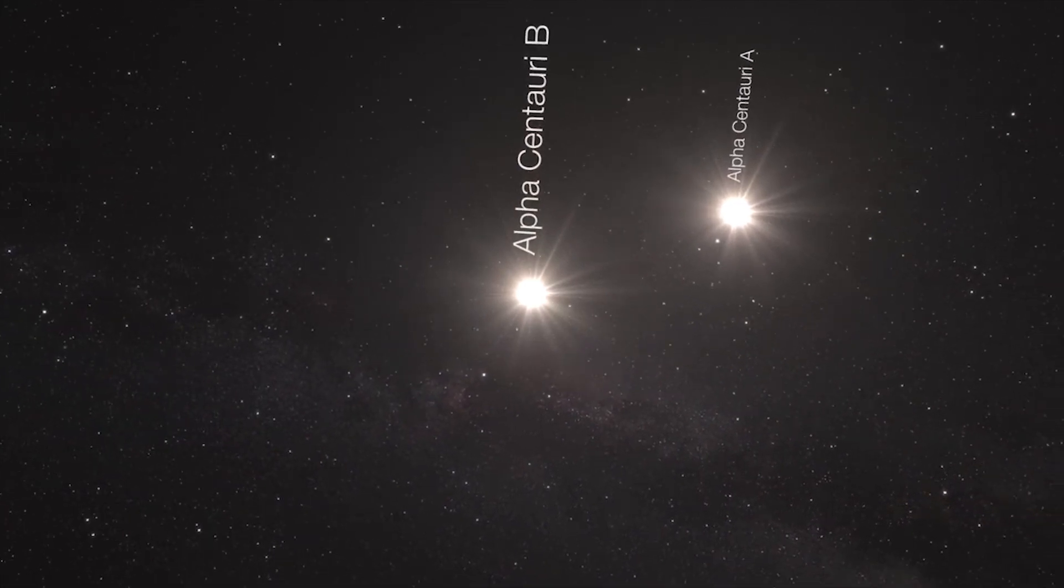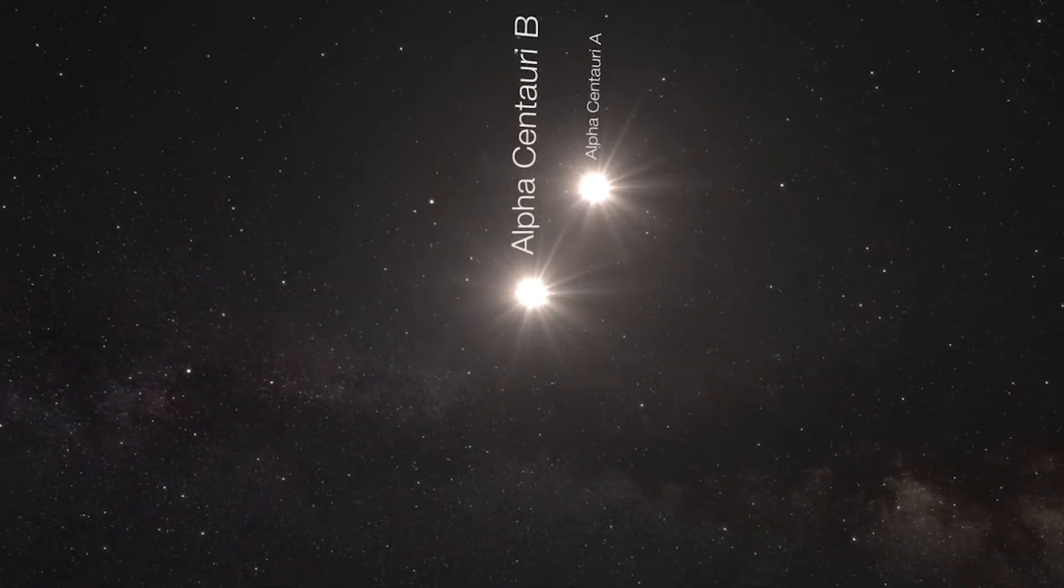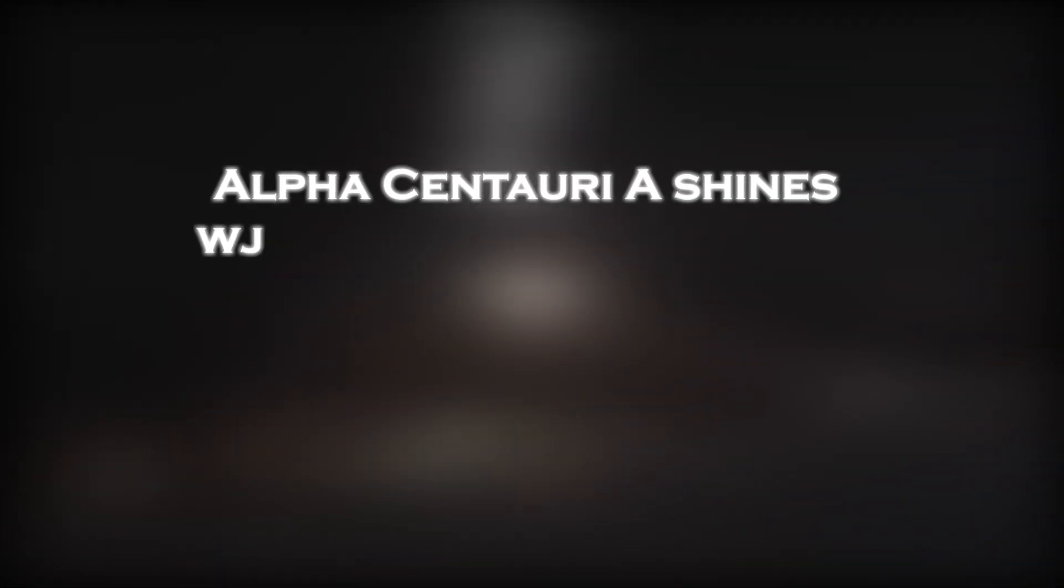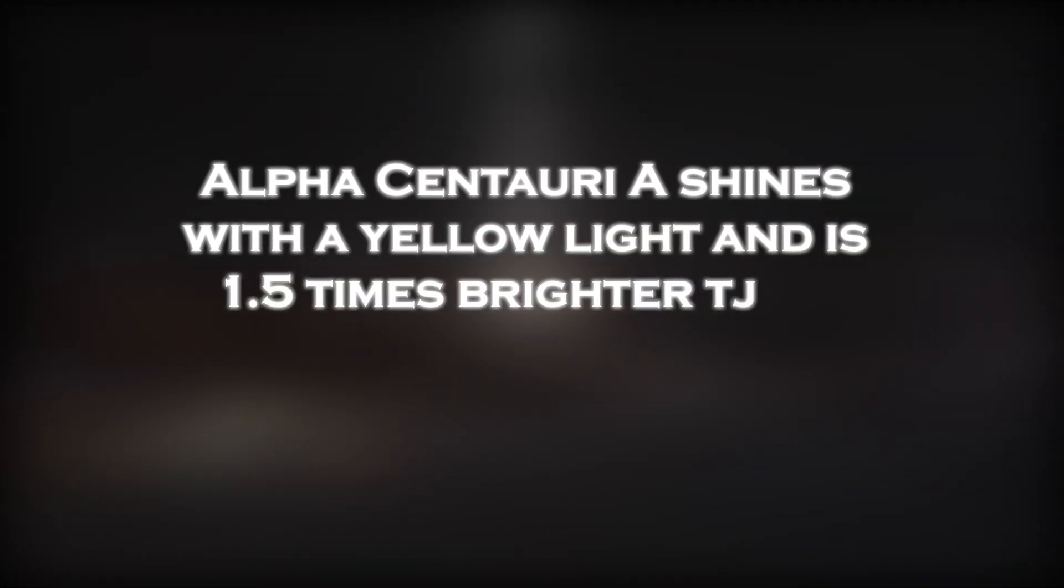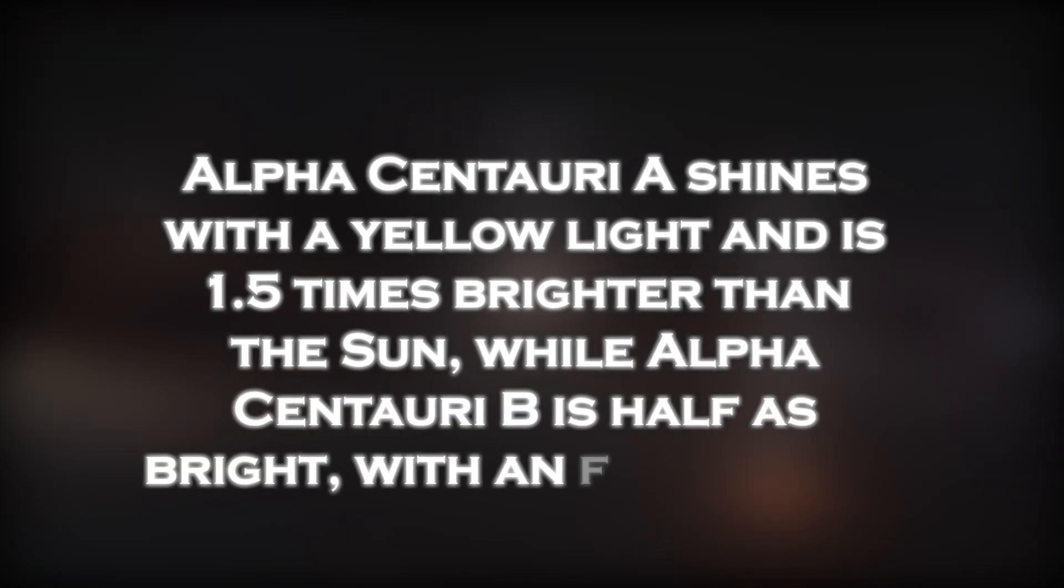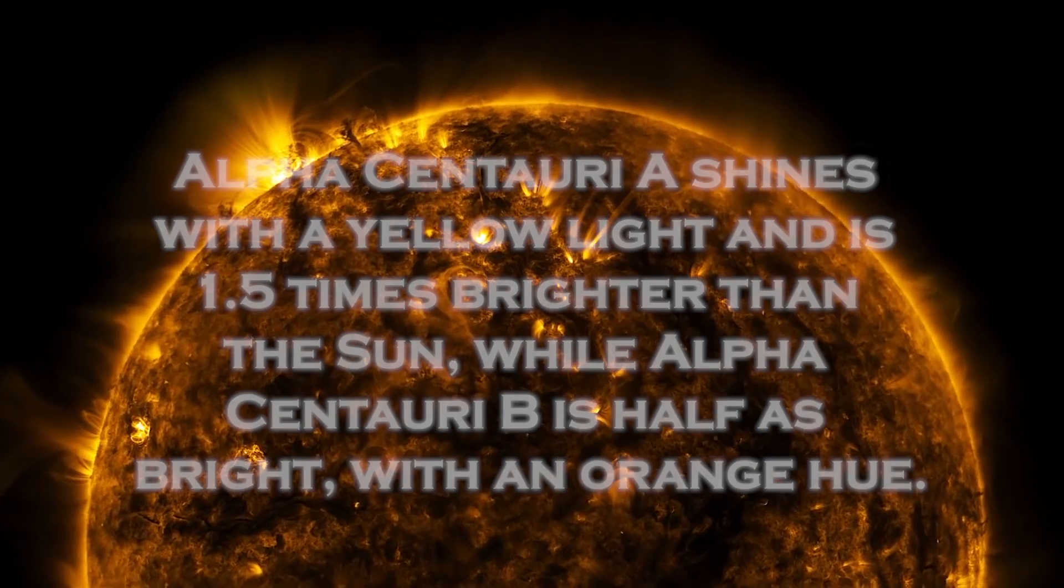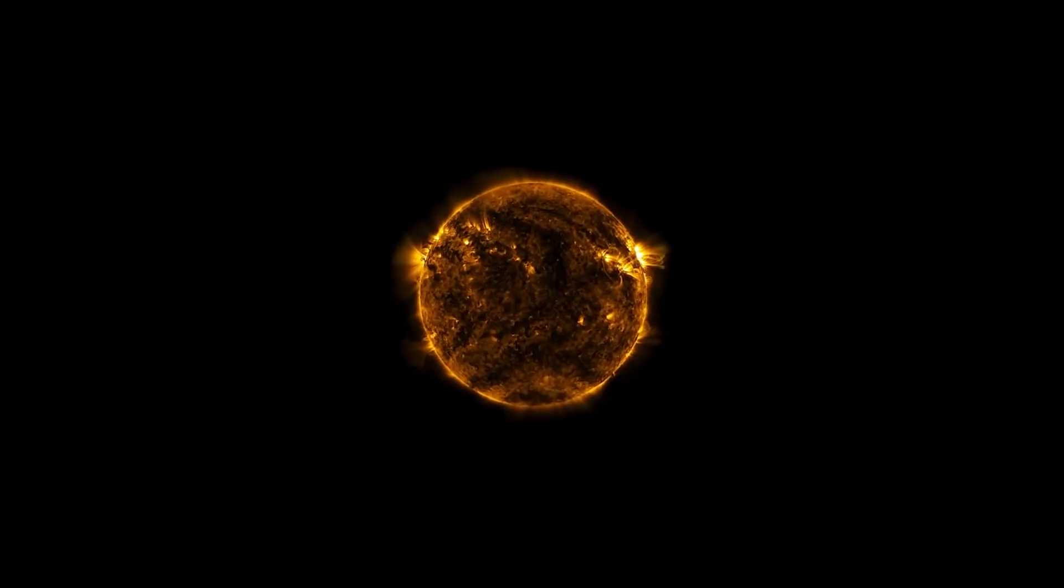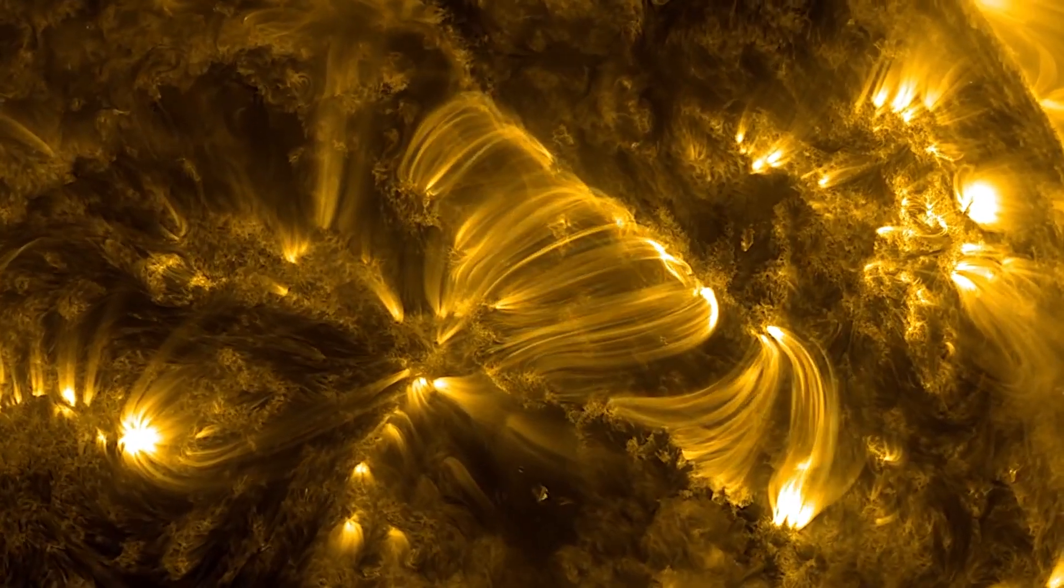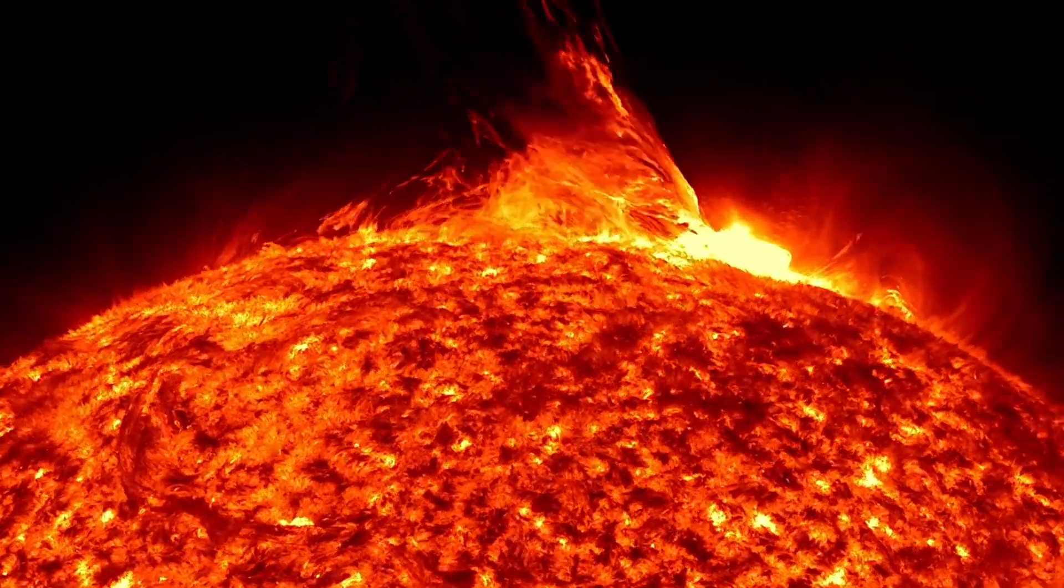Alpha Centauri A and B, the two stellar companions, are relatively close to each other and are quite similar to the Sun. Alpha Centauri A shines with a yellow light and is 1.5 times brighter than the Sun, while Alpha Centauri B is half as bright with an orange hue. Alpha Centauri A is slightly larger than our Sun. Alpha Centauri B is also smaller, so our Sun fits exactly between them in size.